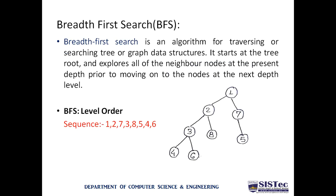Let us start with the breadth-first search approach. Here you have a spanning tree of a given graph. Node 1 is at level 0, nodes 2 and 7 are at level 1, nodes 3, 8, and 5 are at level 2, and nodes 4 and 6 are at level 3. Breadth-first search performs operations level by level — until all nodes at a particular level are explored, you cannot move to the next level.